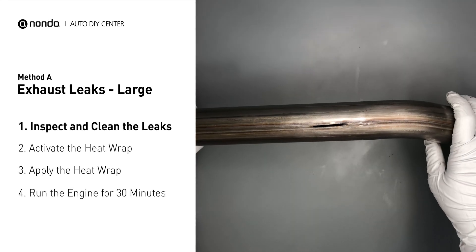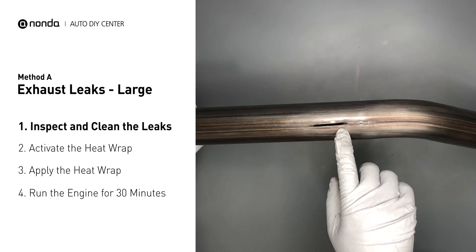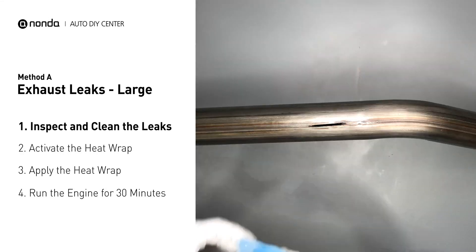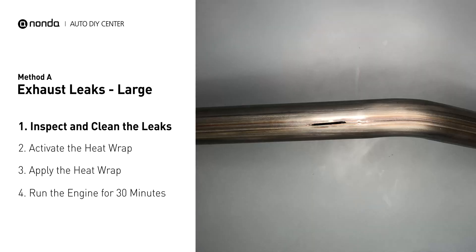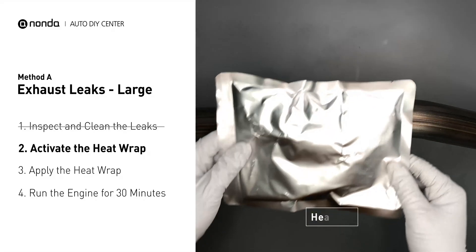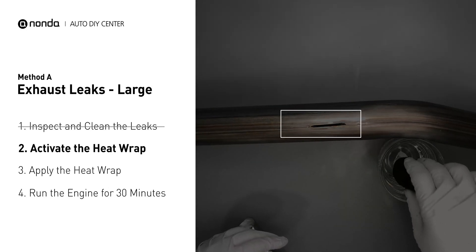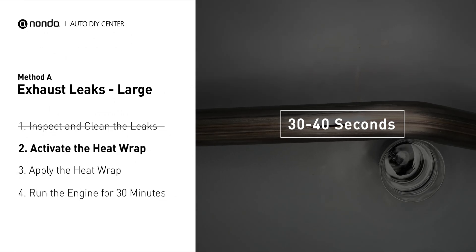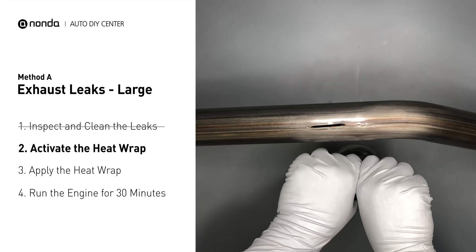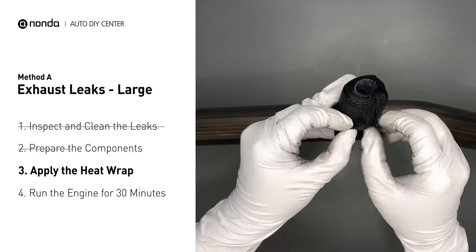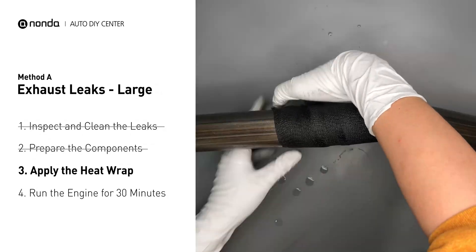Exhaust pipes are made out of rolled steel and there is a welded seam on it. The seam will often rot and create a large leak. First, get sandpaper and a wet wipe to clean the leaking area for better application. Get the heat wrap out and put it in water for about 30 to 40 seconds to start the activation process. Then remove it and squeeze out any excess water. Wrap it around the area and overlap it a couple of inches on each side, repeating the process 3 or 4 times.